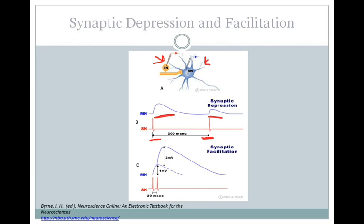Alternatively, you could have synaptic facilitation. If you stimulate your presynaptic cell twice within 20 milliseconds of each other, you can see that your first EPSP is about a millivolt in amplitude and the second one is twice as large. So in addition to the temporal summation of both of them together, you have this facilitation where the second EPSP is larger than the first. This could be due to increased intracellular calcium concentration following the second depolarization, because the calcium that entered from the first depolarization is still around and can sum with the additional calcium entering following the second stimulation.